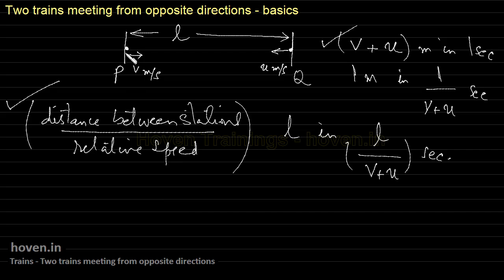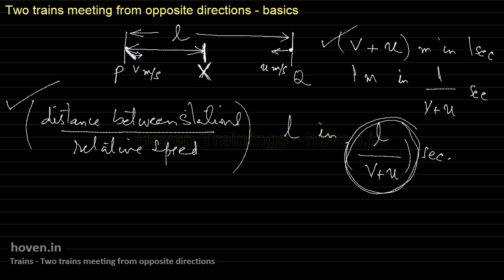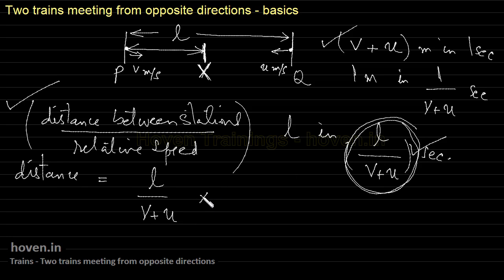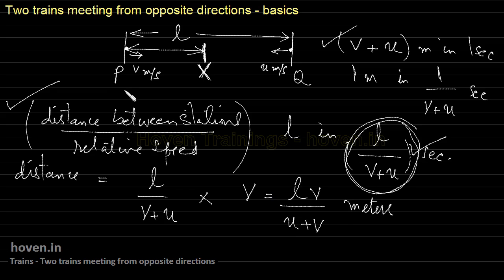Next, at what distance from P do they meet? Suppose they meet at a point X somewhere in between. Since the time taken is L/(V+U) and the speed of the dot from P is V, the distance covered by that dot is V multiplied by L/(V+U), which equals LV/(U+V) meters from point P. Similarly, the distance from point Q where they meet is LU/(U+V) meters.